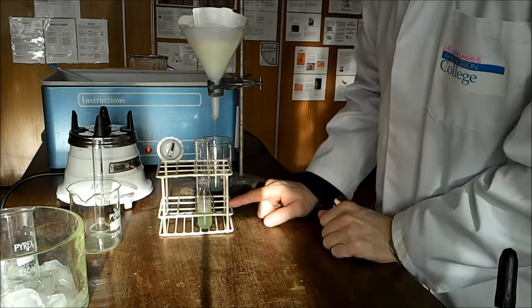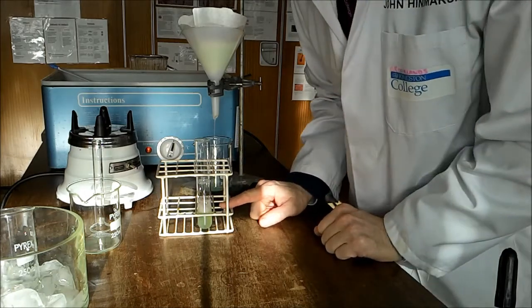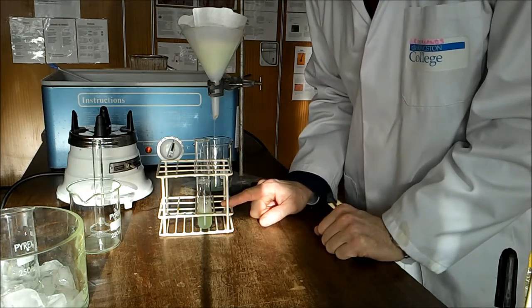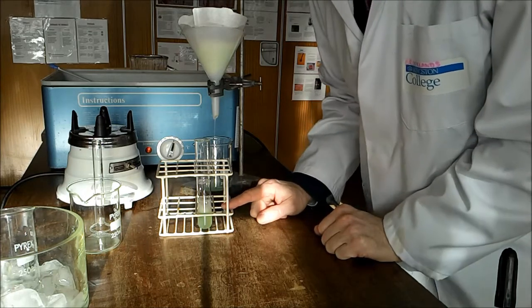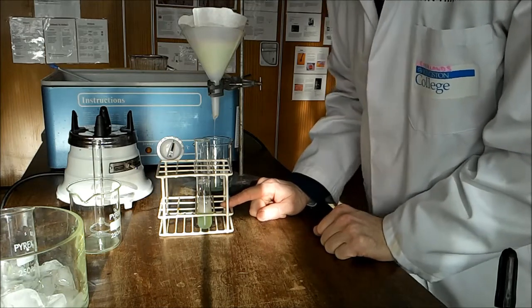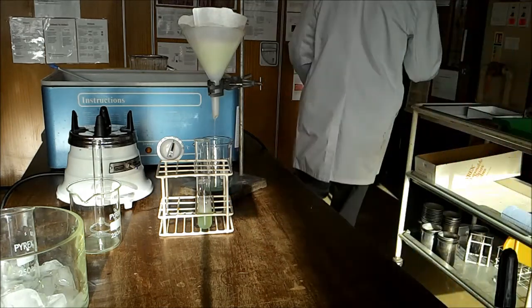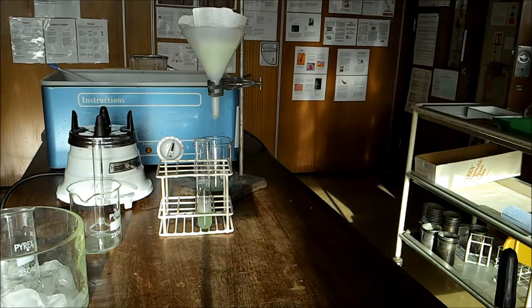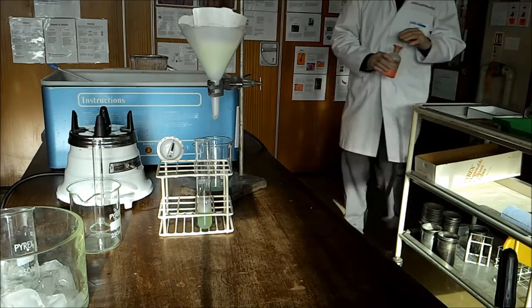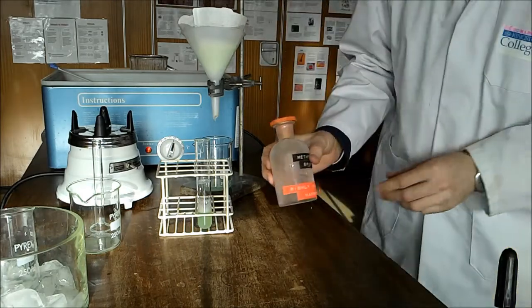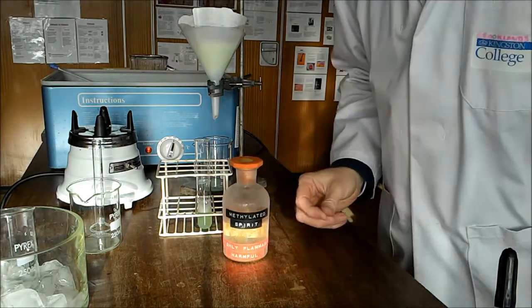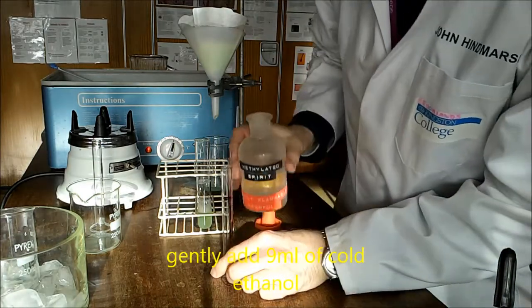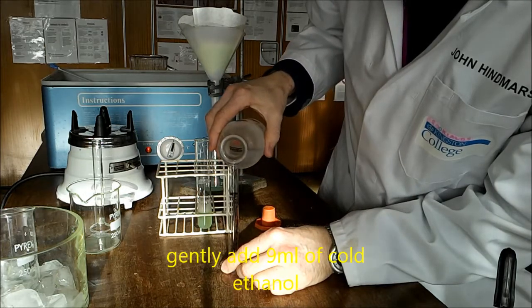In order to precipitate out the DNA, we need to add ice cold ethanol. We are going to add 9 cubic centimeters of ethanol.